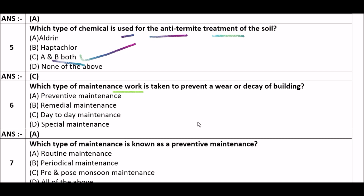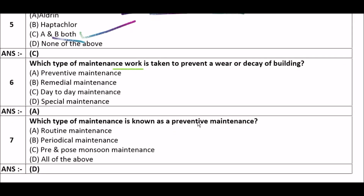Next question: Which type of maintenance work is taken to prevent wear or decay of a building? Option A: preventive maintenance, option B: remedial maintenance, option C: day-to-day maintenance, option D: spatial maintenance. The right answer is option A, preventive maintenance. Preventive maintenance work is taken to prevent wear or decay of a building.